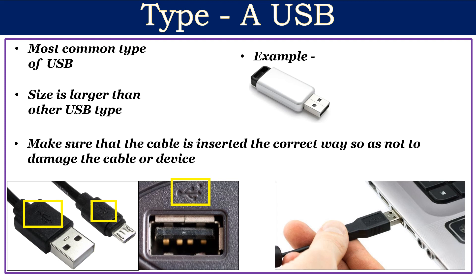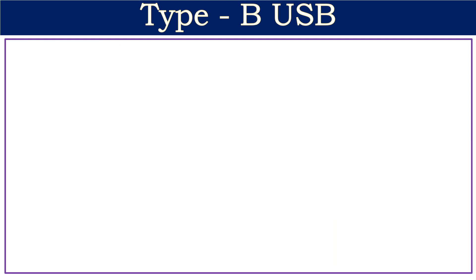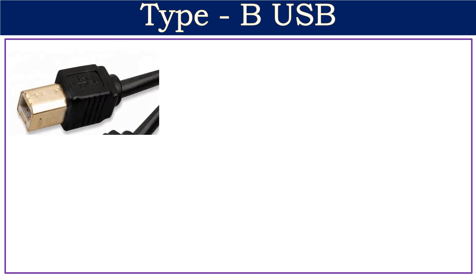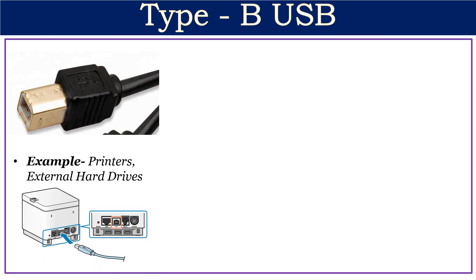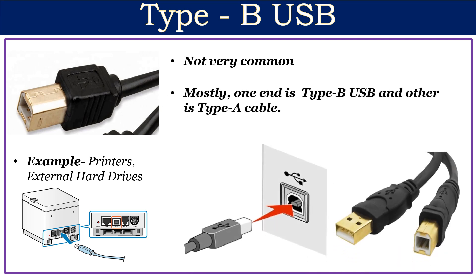The second type is Type B USB. Type B USB ports are mostly used to connect printers or external hard drives to computers. They are not as common as other USB cable types. In most Type B USB cables, one end is Type B USB and the other end is Type A USB.